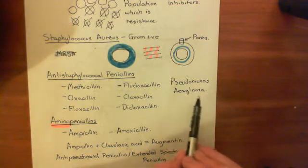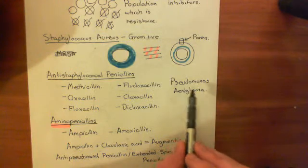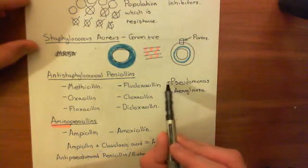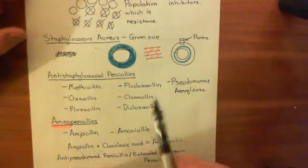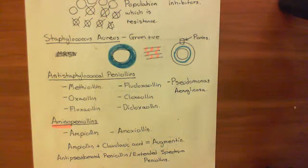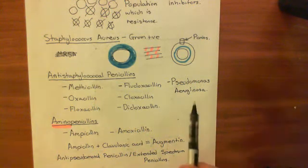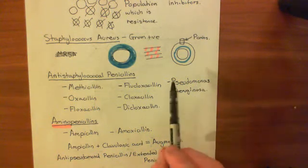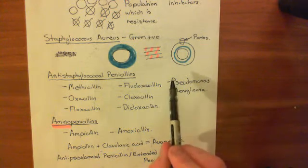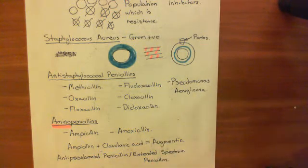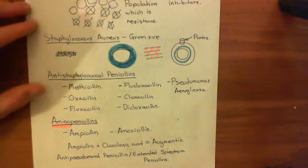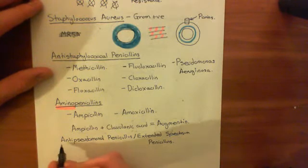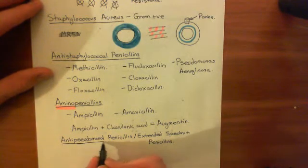Pseudomonas aeruginosa is a horrible infection that people with cystic fibrosis suffer from. Once you've got it, it's pretty much impossible to clear. It causes major destruction of the airways of people with cystic fibrosis and is usually responsible for their deaths due to respiratory failure. These final classes of penicillin are designed specifically to kill Pseudomonas.